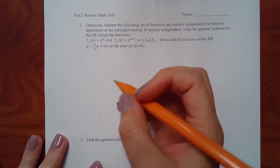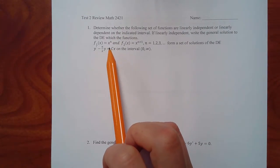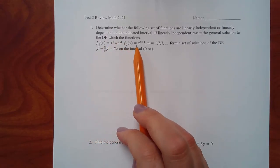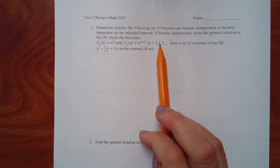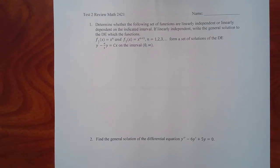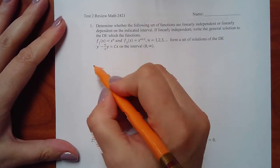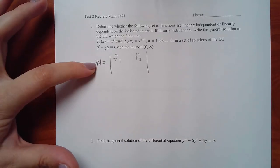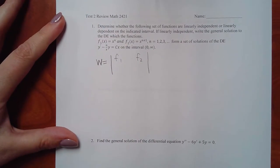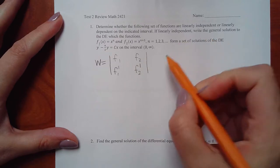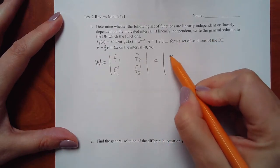They gave us a general function: let f1 equal x to the n and let f2 equal x to the n plus 1, where n can be anything. We want to see if they're linearly independent or not, so we have to figure out the Wronskian. I can put f1 and f2 in the matrix, but when calculating the Wronskian, the primes go at the bottom.